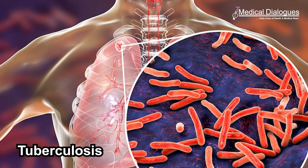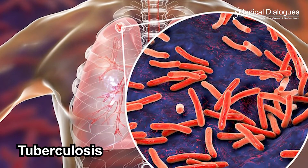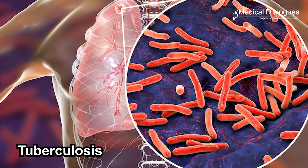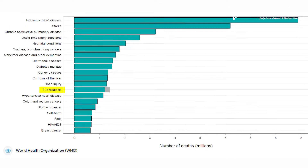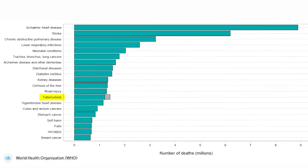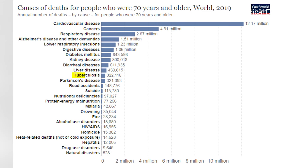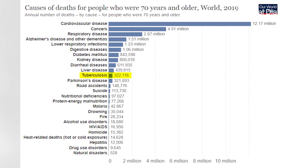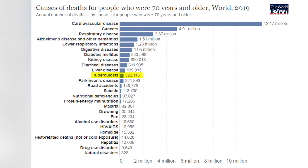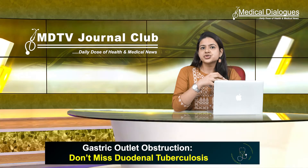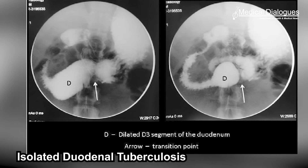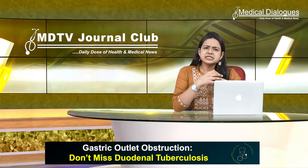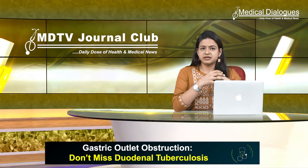Tuberculosis is a potentially serious infectious disease that mainly affects the lungs. A total of close to 1.6 million people died from TB in the year 2021. Worldwide, tuberculosis is the 13th leading cause of death and the second leading infectious killer after COVID-19. Isolated duodenal tuberculosis, however, is a rare entity, generally seen in cases with massive involvement of the rest of the intestinal tract.